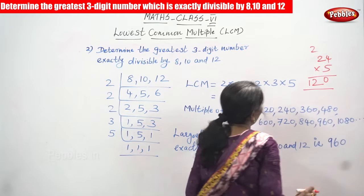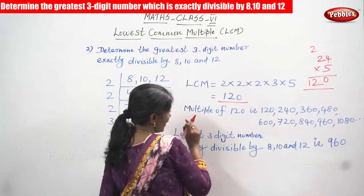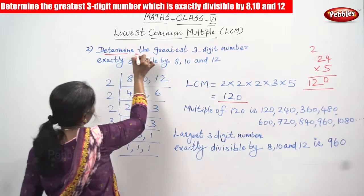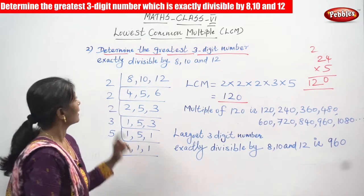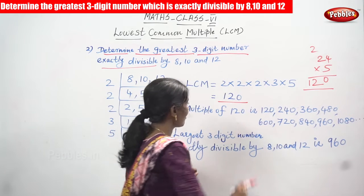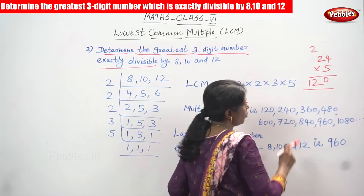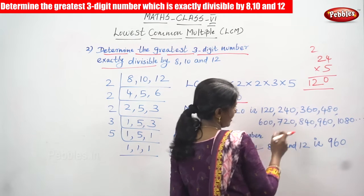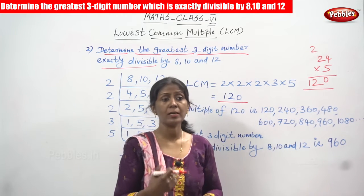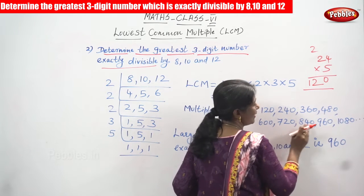Now we have to write the multiples of 120, because we need to determine the greatest three-digit number exactly divisible by 8, 10, and 12. The multiples of 120 are like the multiplication table of 120: 120 × 1 = 120, 120 × 2 = 240, 120 × 3 = 360, 120 × 4 = 480, 120 × 5 = 600, 120 × 6 = 720.